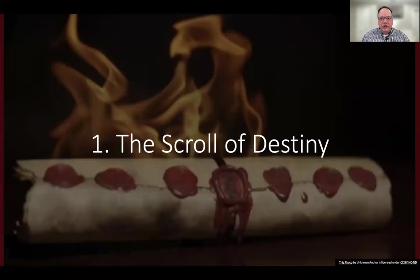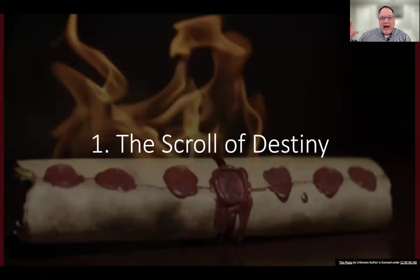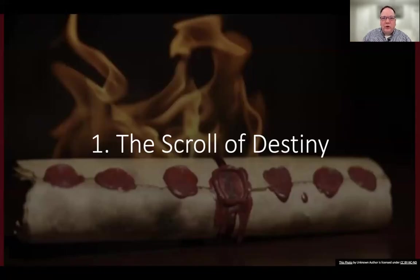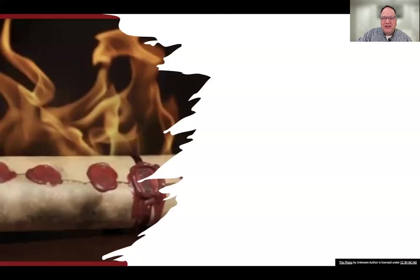We are introduced to more of the structure of heaven, angelically speaking. We see the four living creatures around the throne, then the 24 elders around them, and then the myriad of angels. Those are the three key groups: God, the four living creatures, and the 24 elders. As we get into chapter 5, God is holding a scroll in his right hand, and there are key descriptors about the scroll that are critically important.